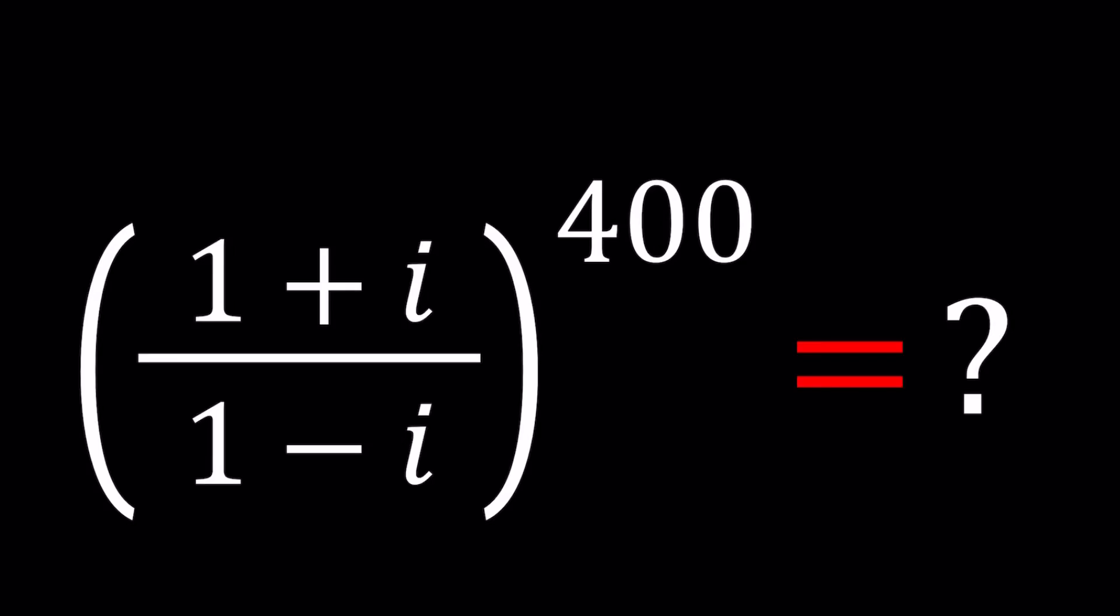Hello everyone, welcome to A Plus B I. This channel is all about complex numbers, and in this video we're going to be simplifying a rational complex expression. We have 1 plus i divided by 1 minus i, and we're going to raise it to the power 400. Such a large number, right?